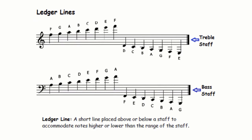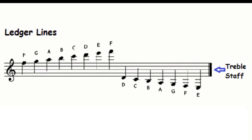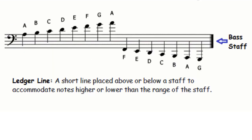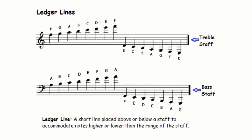Ledger Lines — Ledger Line Notes. A ledger line is used to notate pitches above or below the lines and spaces of the musical staff. A line a bit longer than the note head is drawn parallel to the staff, above or below.